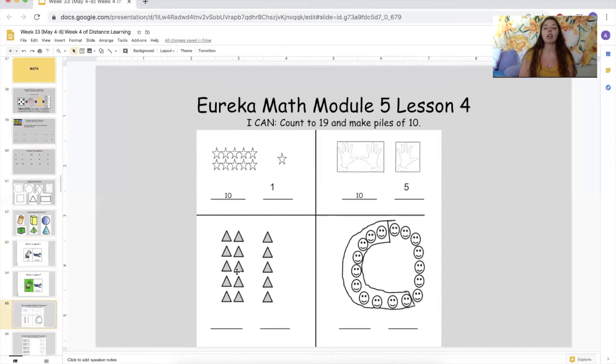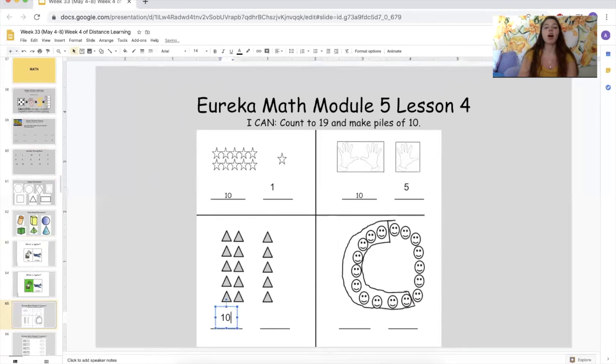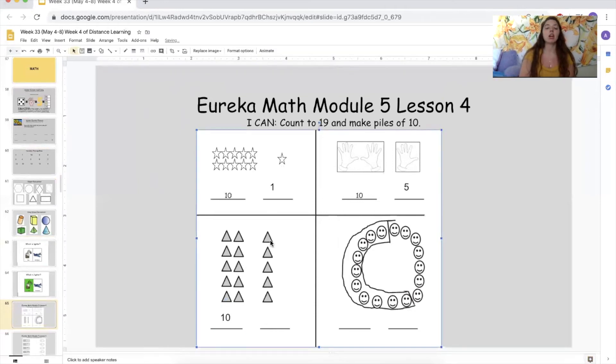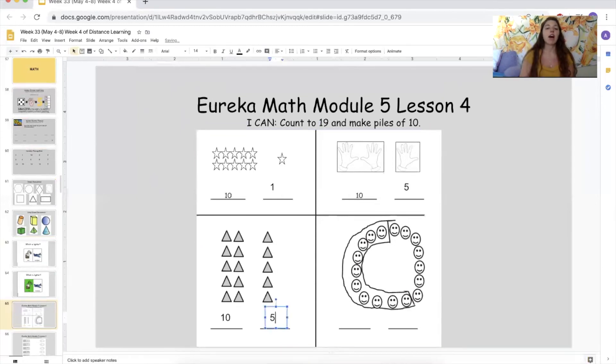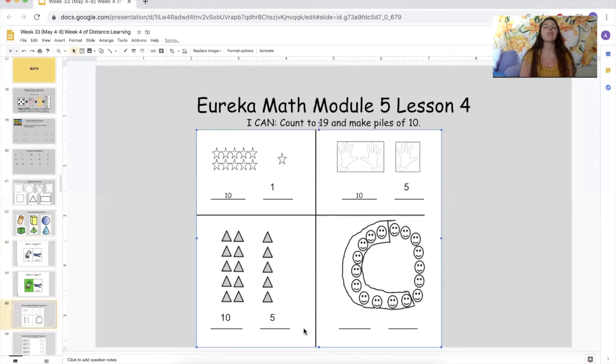Now I want you to help me. A group of how many is here? 10 ones. And how many are here? One, two, three, four, five. So what goes on this line? Five. Very, very good. Very, very good. So this is a group of 10 ones and a group of five ones. Excellent.